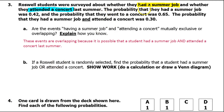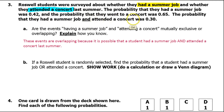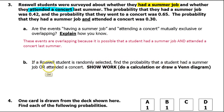The probability that they had a summer job was 0.42, and the probability that they went to a concert was 0.65. The probability that they had a summer job and attended a concert was 0.30. If a Roswell student is randomly selected, find the probability that a student had a summer job or attended a concert.